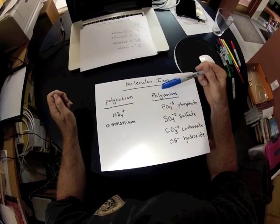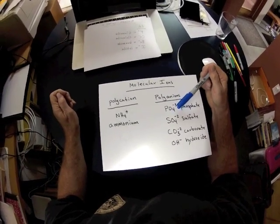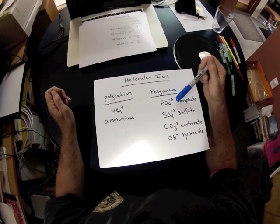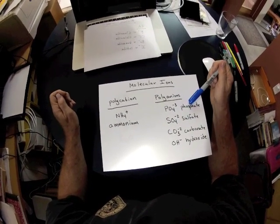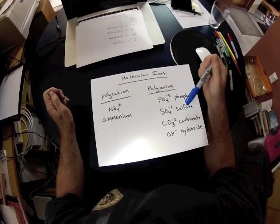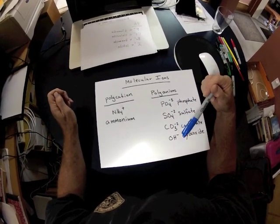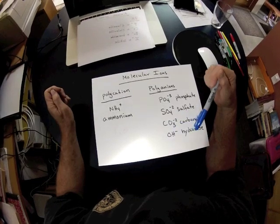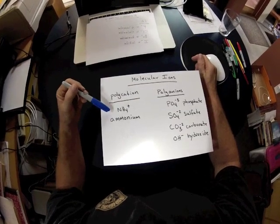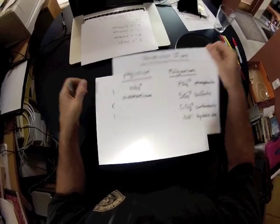The polyanions—the prefix poly is a reference to the fact that there's going to be more than one atom in these molecules—and they're anions because they've got extra electrons. In the case of phosphate, its formula is PO4-3. Sulfate, SO4-2. Carbonate, CO3-2. And my last example is hydroxide, or OH-. There's only one polycation that we have to be concerned about, and that's called ammonium, shown here.